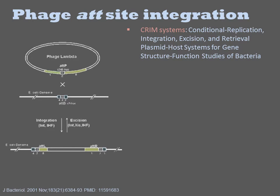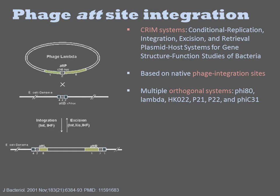The CRIM system is one popular implementation of this biochemistry. CRIM plasmids can be inserted into the genome using an integrase and then later excised by expression of integrase and excisase. These att and integrase components are derived from various phages, many but not all from E. coli phages.